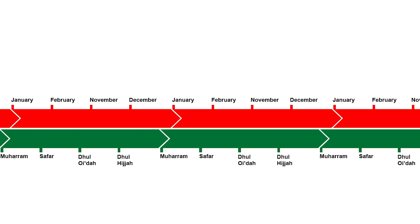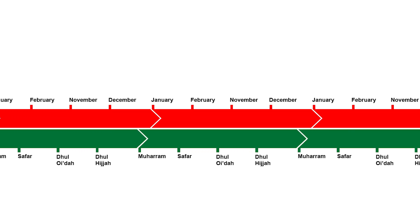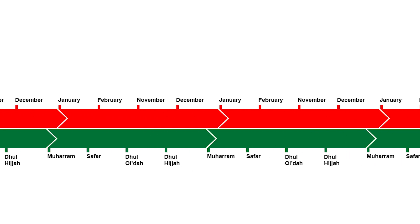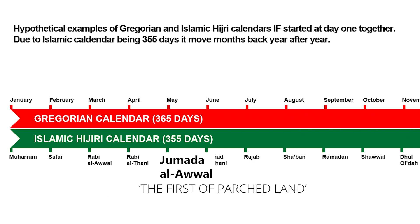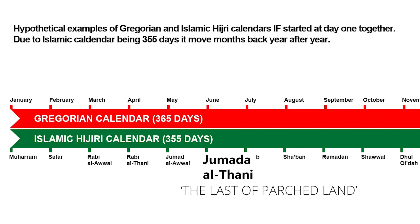But interestingly enough, the names of the Islamic calendar months reflect the seasons. For example, the third month, Rabi Al Awwal, meaning the first spring. The fourth month, Rabi Atsani, meaning the last spring. The fifth month, Jumada Al Awwal, meaning the first of parched land. The sixth month, Jumada Atsani, meaning the last of parched land.